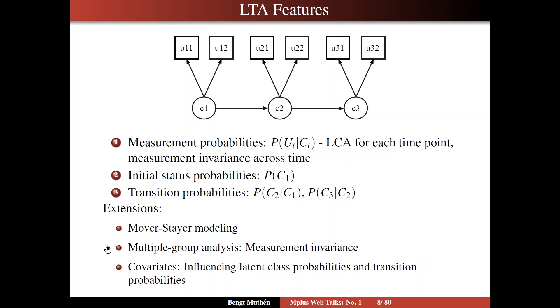You often do multiple group analysis. That is, you have observed groups, observed divisions of the sample, as opposed to the unobserved division of the mover-stayer. You usually look at measurement invariance, so measurement invariance across groups, not across time. For instance, do males and females have the same dating transitions?